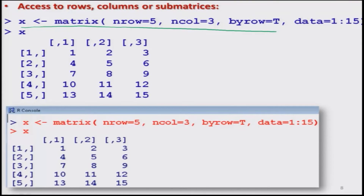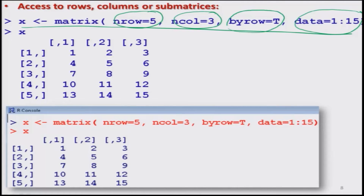I will create another matrix X with 5 rows, 3 columns, and data values from 1 to 15, arranged by rows. So this will be a 5 by 3 matrix whose values are 1 to 15 arranged in rows: 1, 2, 3, then 4, 5, 6, then 7, 8, 9, and so on up to 15.